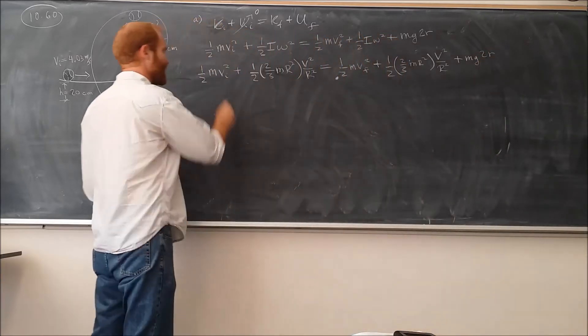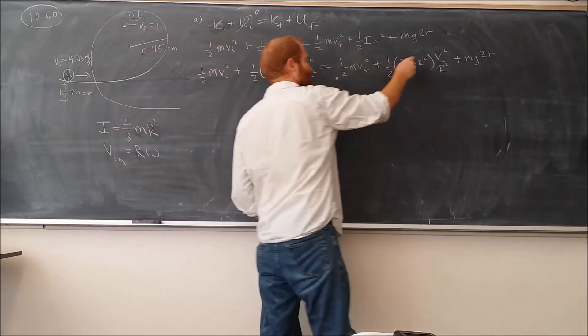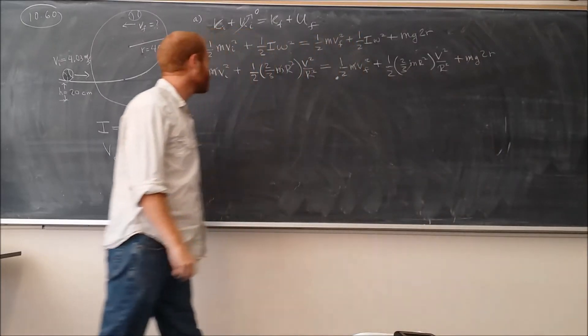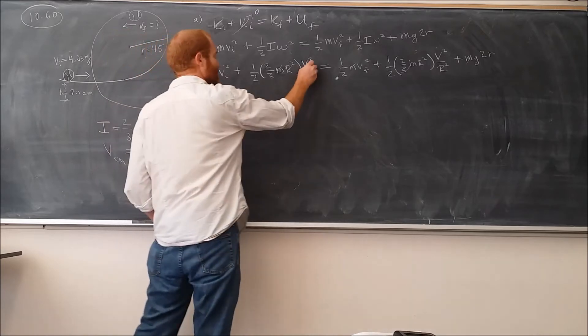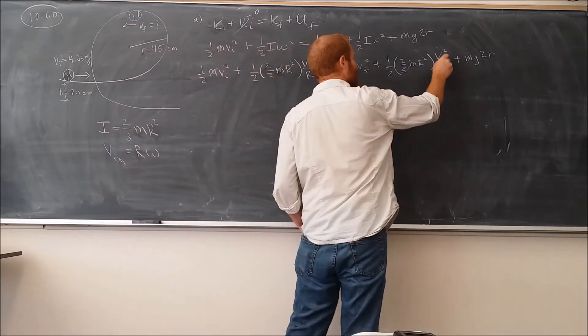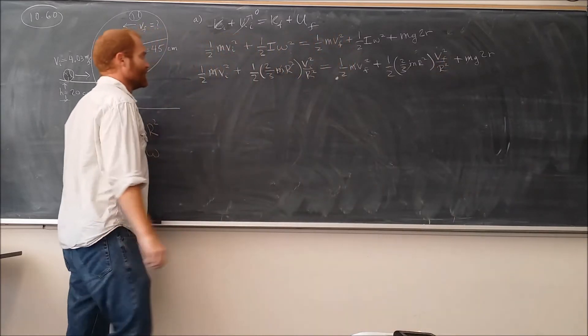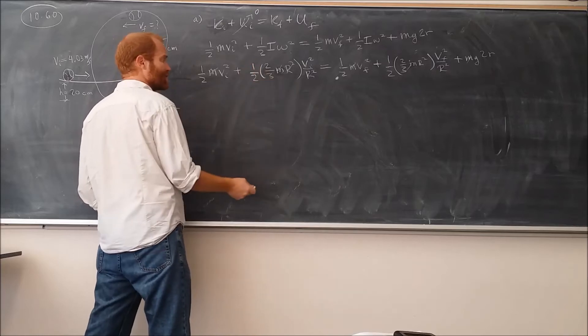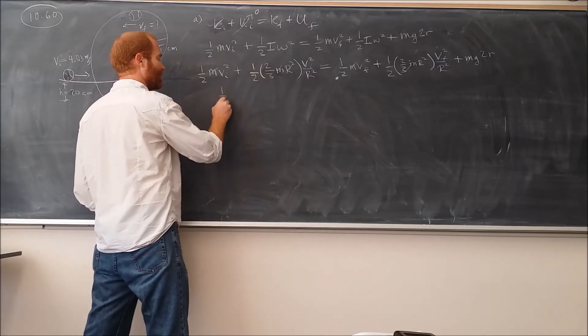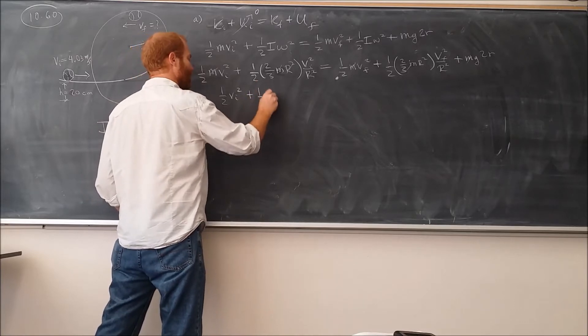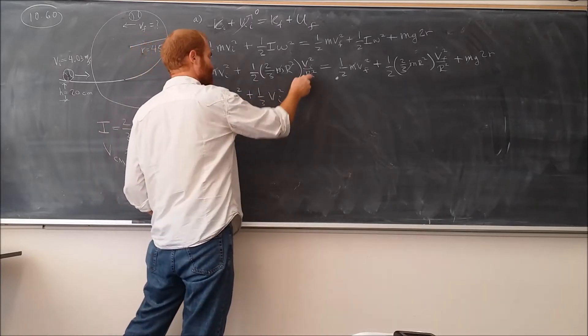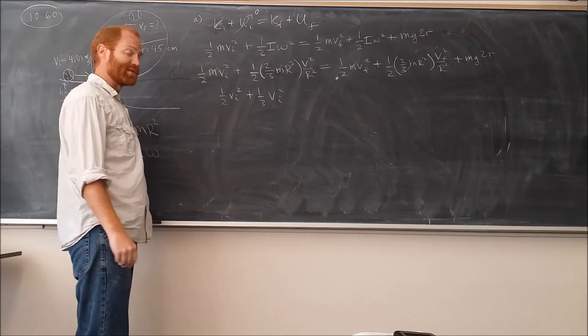There we go. Now, we can cancel a mass out of every term. Every term has a mass in it. Over here we have 1/2 Vi squared plus, that's Vi by the way, that's Vf. So here we have 1/2 times 2/3, so we're going to get a third. So we basically have 1/2 Vi squared plus 1/3 Vi squared, because the R squareds cancel. And a half plus a third is 5/6.